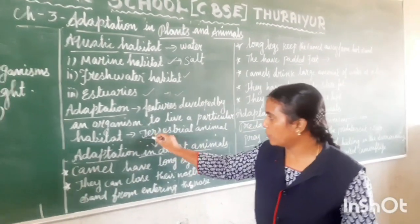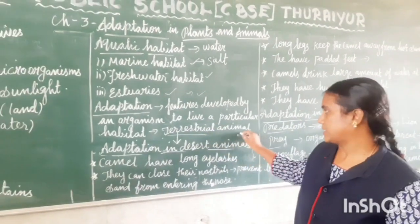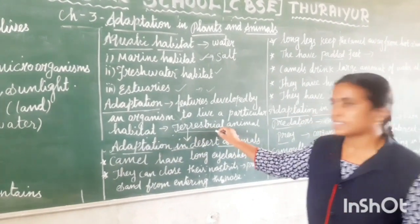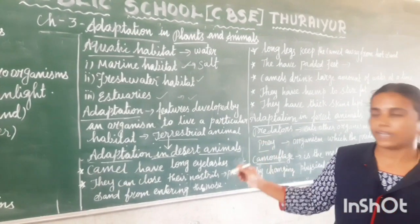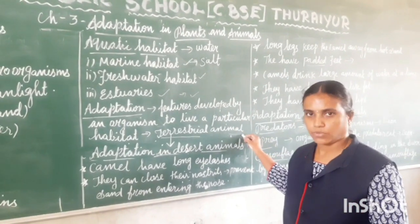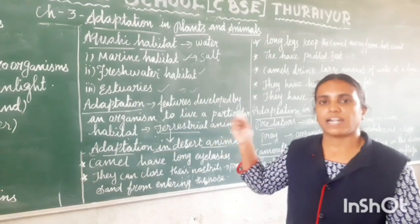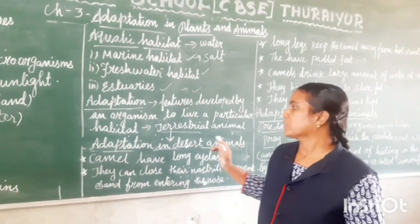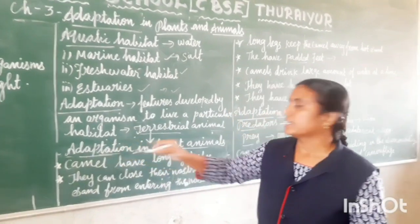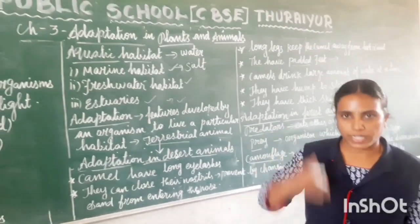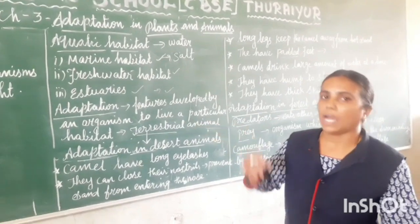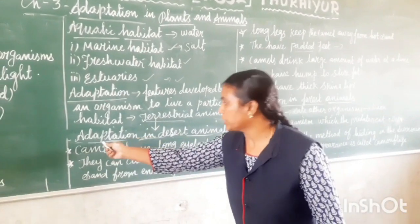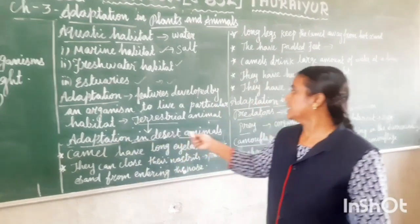Today we are going to see adaptation in desert animals. Animals that live on land are called terrestrial animals. We will now look at adaptation in desert animals specifically.